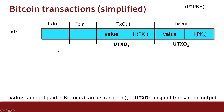Now that we understand what addresses are, let's look at how fund transfers actually happen in Bitcoin. What I'm going to describe is one particular payment mechanism in Bitcoin called pay-to-public-key-hash. The way this works is by issuing transactions.